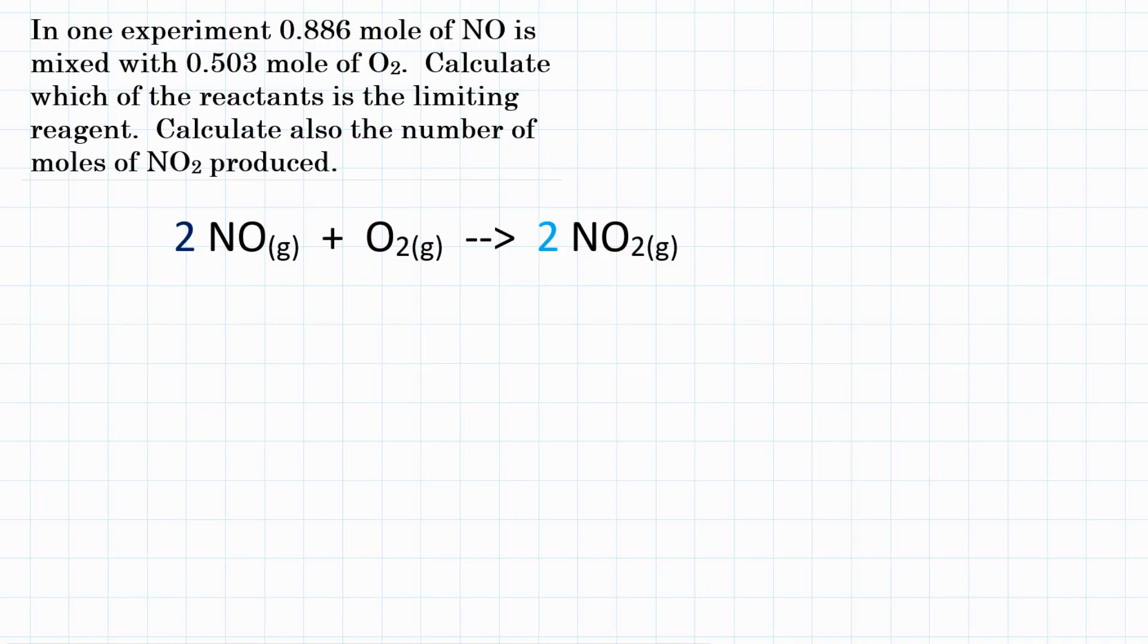So this is a limiting reactant problem because we are given both 0.503 moles of O2 and 0.886 moles of NO. We're given both amounts of our reactants, so we're going to set up two stoichiometry problems and only use the one that produces the lesser amount of our product.